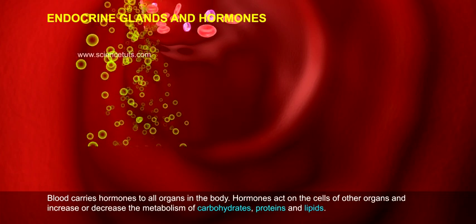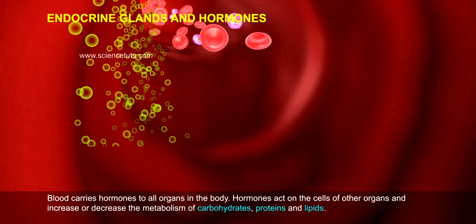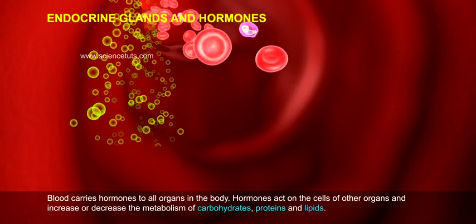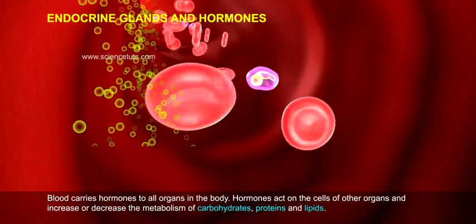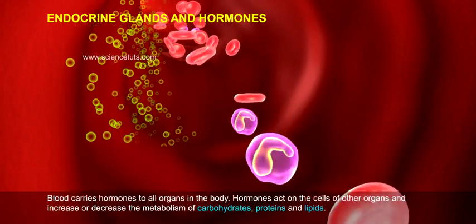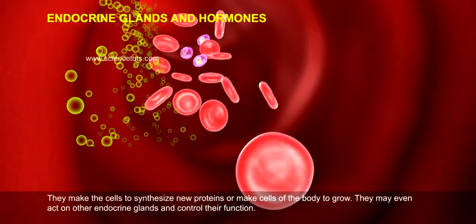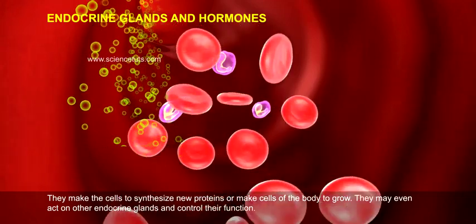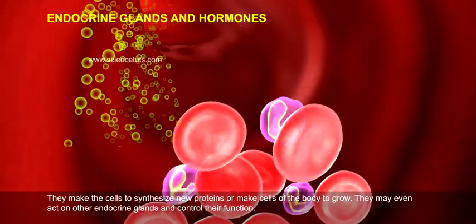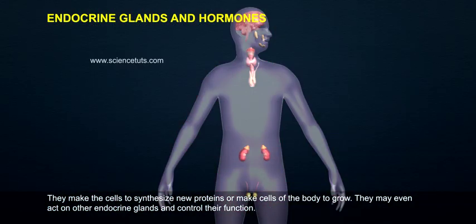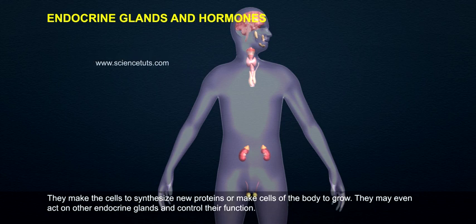Hormones act on the cells of other organs and increase or decrease the metabolism of carbohydrates, proteins, and lipids. They make the cells to synthesize new proteins or make cells of the body to grow. They may even act on other endocrine glands and control their function.